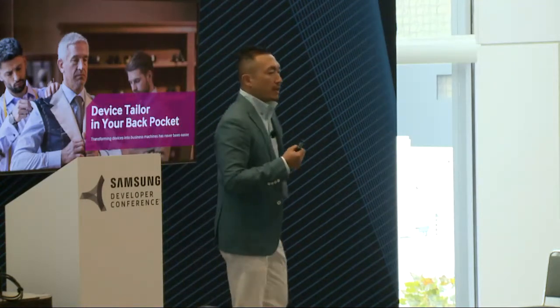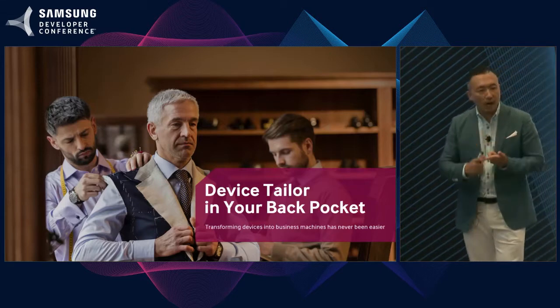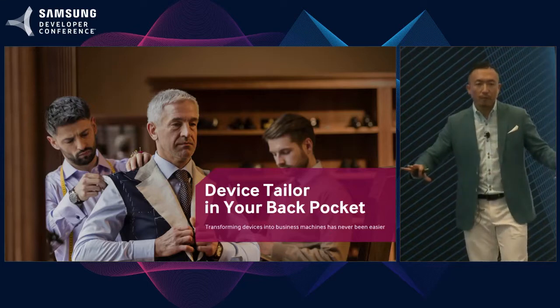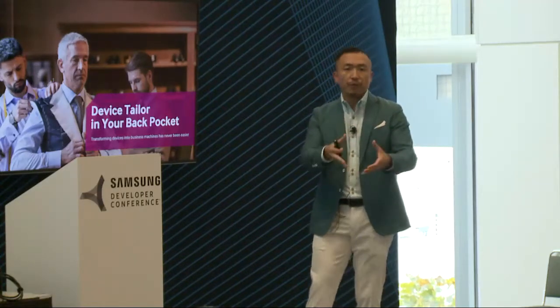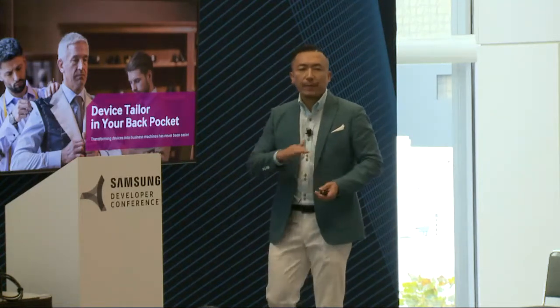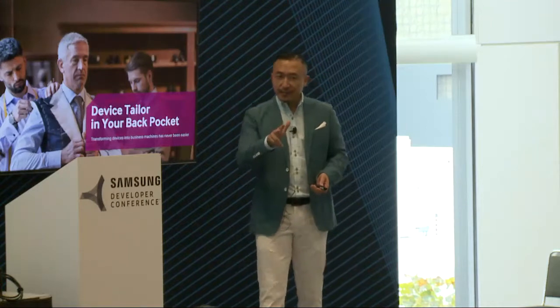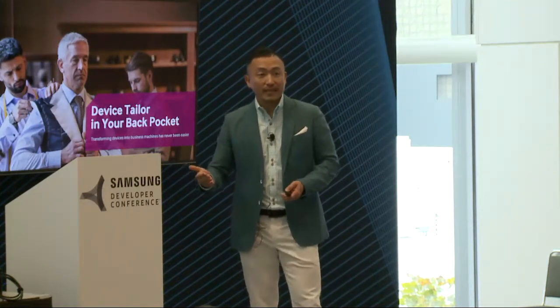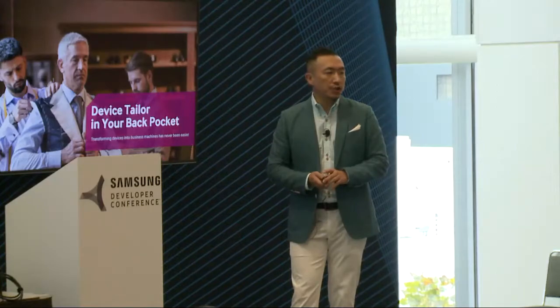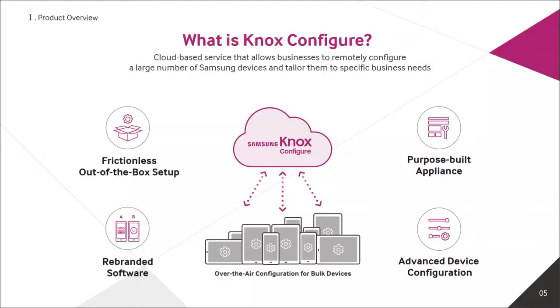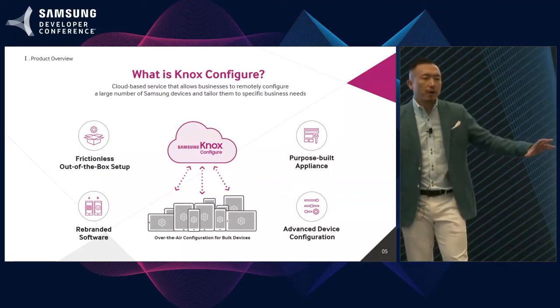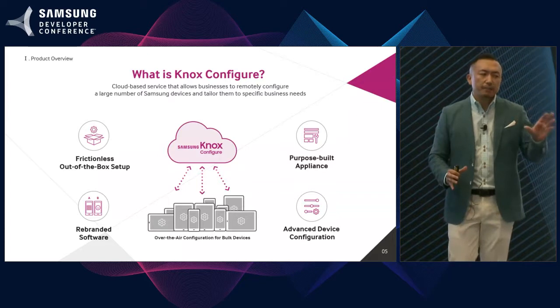Knox Configure makes use of the device configuration and customization capability in the underlying Knox platform in order to provide a tailored user experience for off-the-shelf Samsung devices. One size does not fit all — every Samsung device may be created equal at the factory, but that doesn't mean everyone wants to use them the same way. That is exactly where Knox Configure comes in. It offers a sophisticated and comprehensive cloud-based solution that allows enterprise customers to remotely configure a large number of Samsung devices and tailor those devices to their specific business requirements.